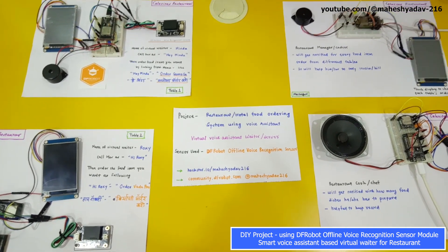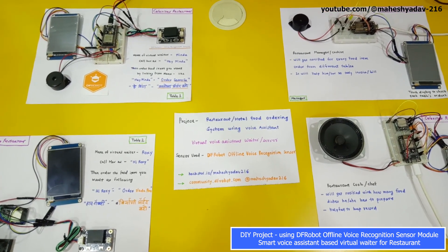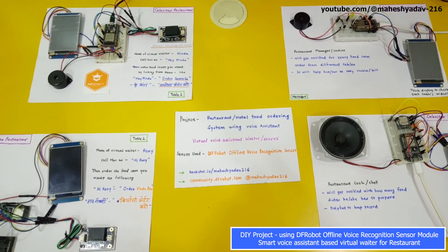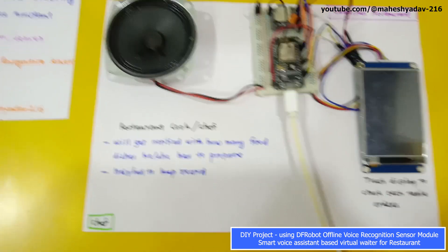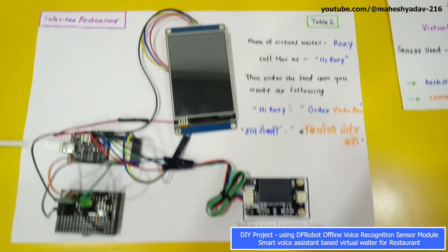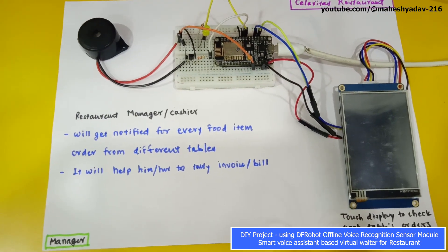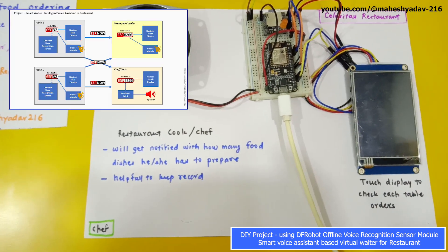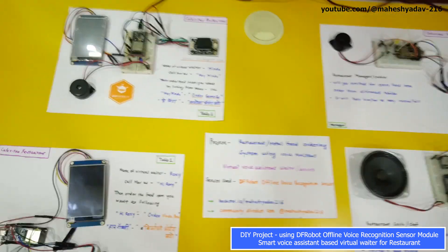Now let's see all the hardware of this project one by one. Suppose there is one restaurant where there are multiple tables where customers come, sit, and order food items. There will be one manager or cashier who manages the accounting, and one cook or chef who prepares the food. For the demo, we have simulated two tables: Table 1 and Table 2. This hardware will be installed on customer tables, the manager's hardware at the manager's desk, and the chef's hardware at the chef's station.